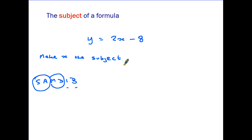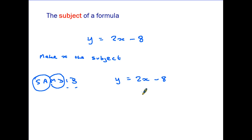Let's rewrite out this example. We are starting with y equals 2x minus 8. We need x on one side of the equation and everything else on the other — that way x becomes the subject. So we need to move the 8 and the 2, one step at a time, following the order of operations. Subtractions and additions go first, so I'm going to move the 8.